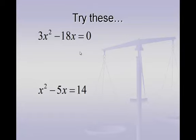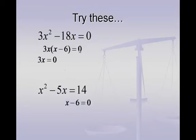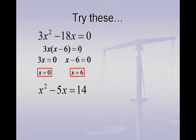On the first problem, we're going to begin by taking out the greatest common factor, which here is 3x. When I take out a 3x from both terms, I have x minus 6 left inside the parenthesis. Take each factor and set it equal to 0 to solve for x. On the first factor, I divide by 3, giving x equals 0. On the second factor, I add 6, giving x equals 6. So 0 and 6 are the answers to this problem.